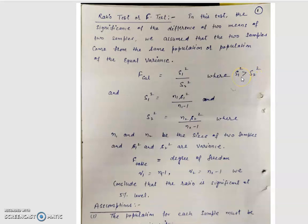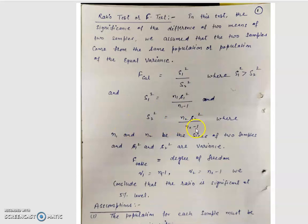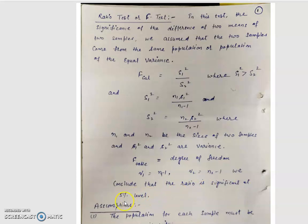If S1² is not greater than S2², then F calculate is S2² upon S1². We have S1² equal to N1 times small s1² upon N1 minus 1, and S2² equals N2 times small s2² upon N2 minus 1, where N1 and N2 are sample sizes and small s1² and s2² are variances. For the F table value, the degrees of freedom are nu1 equal to N1 minus 1 and nu2 equal to N2 minus 1, and we check significance at the 5% level.